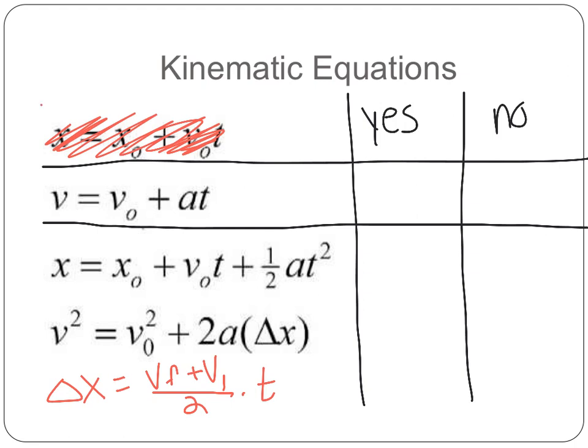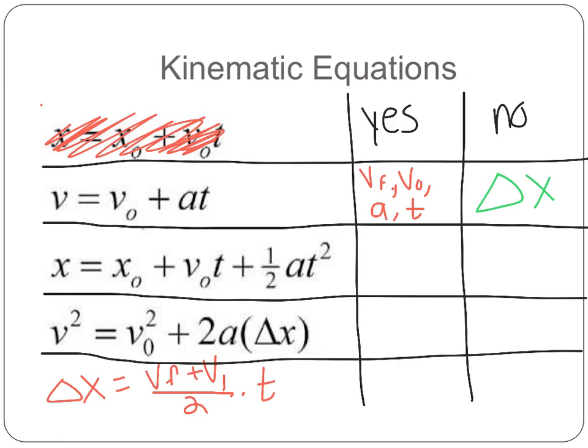So in our first equation, I have velocity final, velocity initial, a, and t. Which one don't I have? I do not have delta x. So if I'm looking for delta x or I'm given delta x, this is not the equation that I should be using.